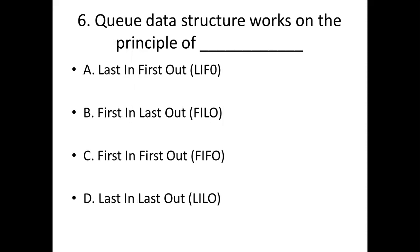Sixth bit. Queue data structure works on the principle of dash. Option A, last in first out. Option B, first in last out. Option C, first in first out. Option D, last in last out. Answer is the same. Option C, first in first out.